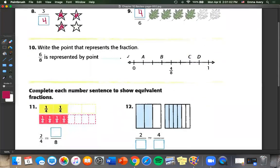Number 10, write the point that represents the fraction six eighths. Well, let's fill in our missing. So we know our denominator is always going to be eight. And our numerator is going to count up by one. So one eighth, two eighths, three eighths, four eighths, five eighths, six eighths, and seven eighths. So which one of these is represented by six eighths? Well, it's going to be C right here.